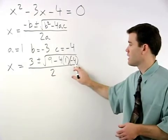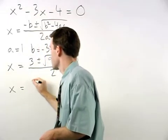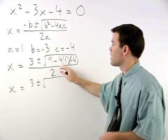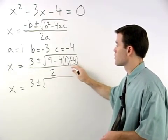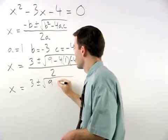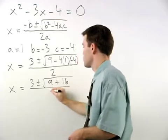Simplifying inside the radical, we have x equals 3, plus or minus the square root of 9 minus 4 times 1 times negative 4, which is 9 plus 16, over 2.